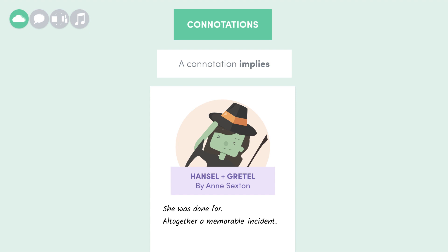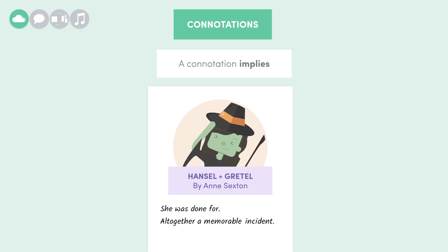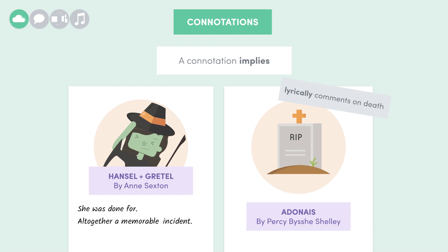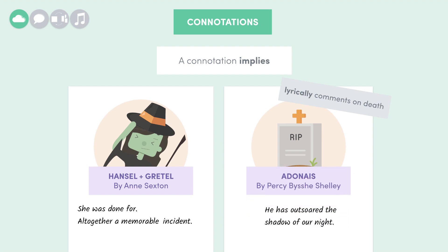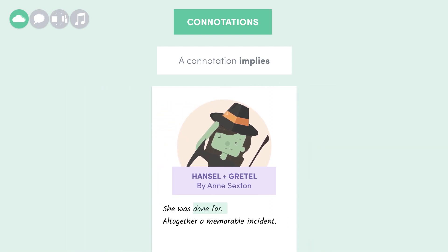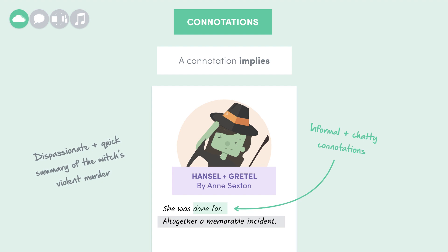Now, there are lots of ways of reflecting on someone's death in poetry, and most of them don't look like this. Take this line from Adonais by Percy Bysshe Shelley, which lyrically comments on fellow poet John Keats's death: 'He has outsoared the shadow of our night.' I don't know about you, but I know which one I'd rather have on my grave. The phrase 'done for' in Sexton's poem has really informal and chatty connotations, and it's odd that Sexton tries to sum up the violent murder of the witch quickly and dispassionately by saying, 'altogether, a memorable incident.'